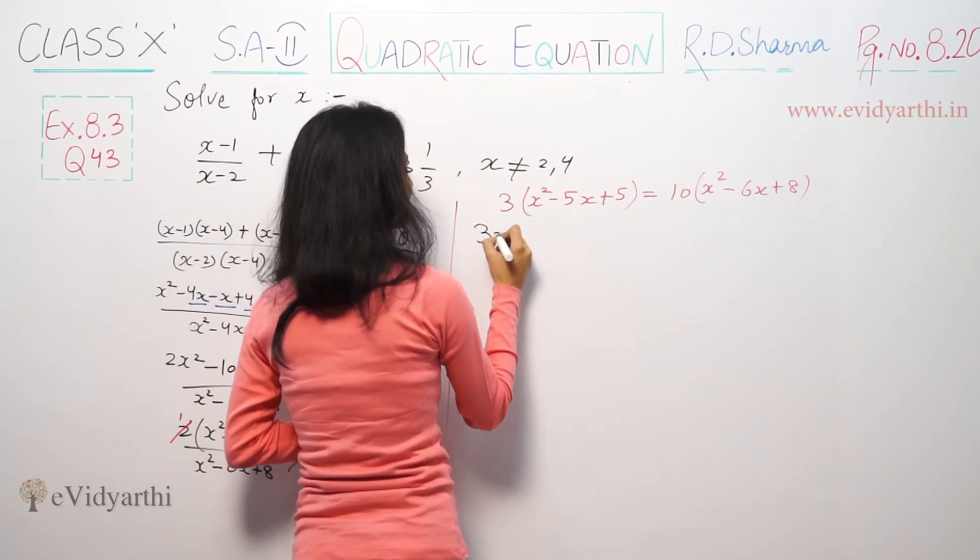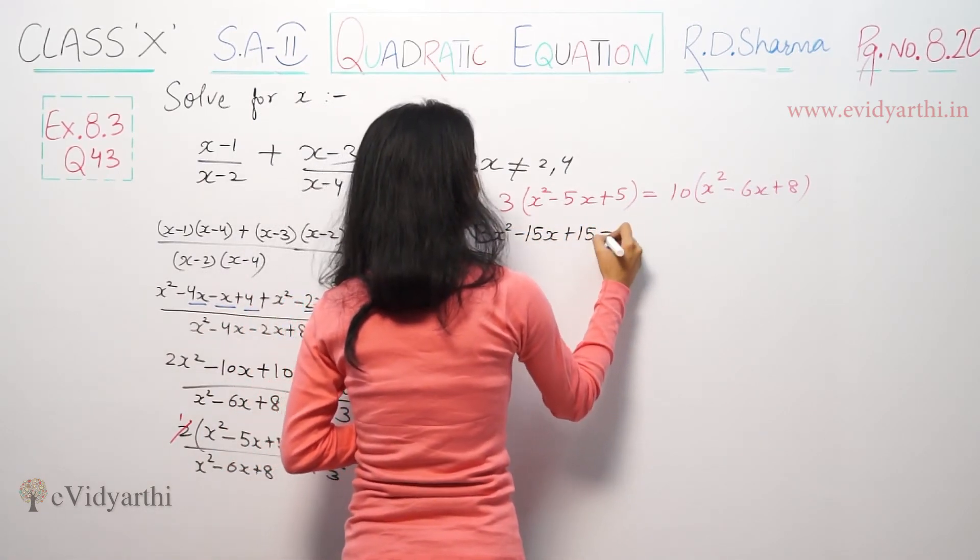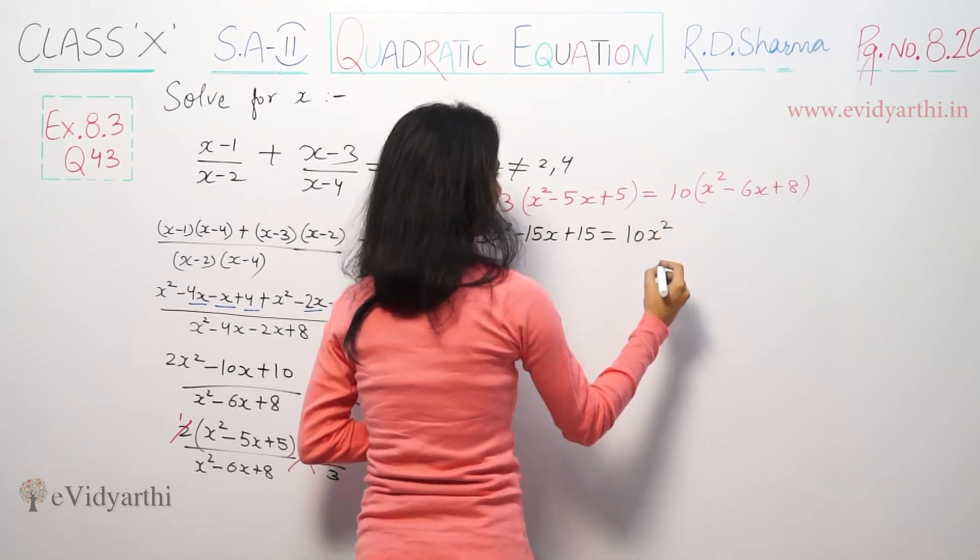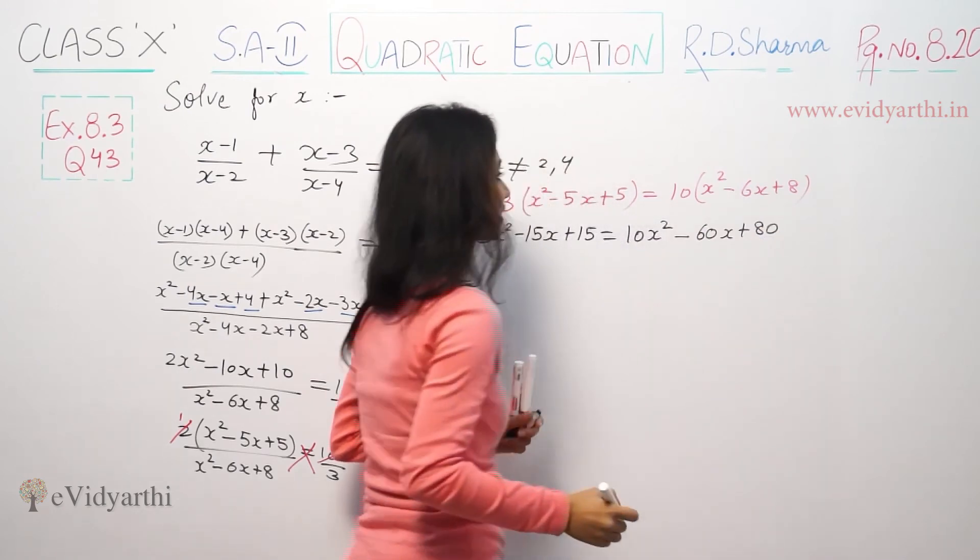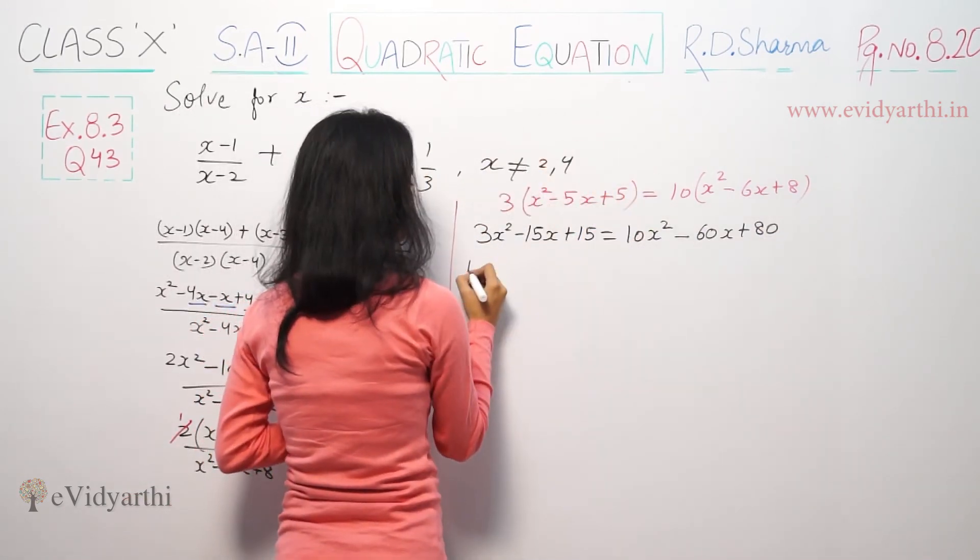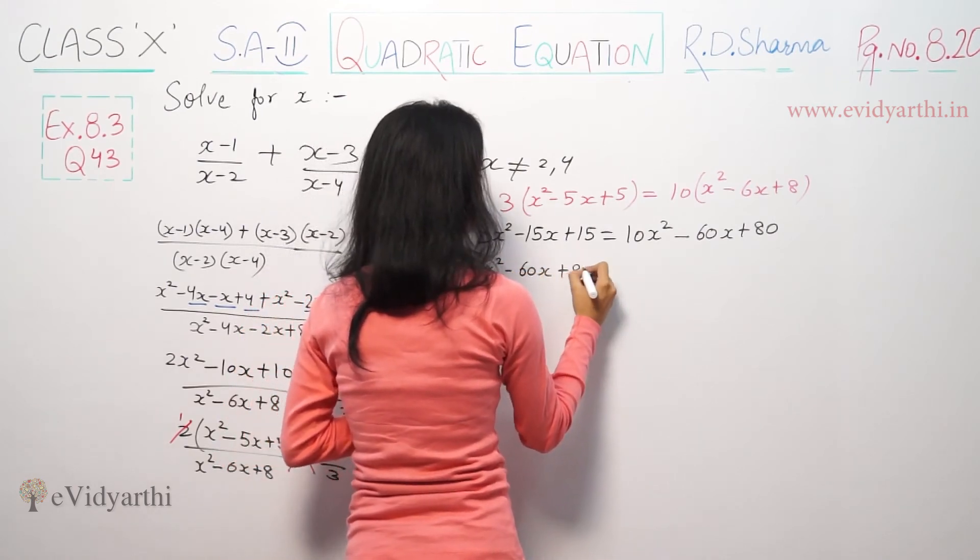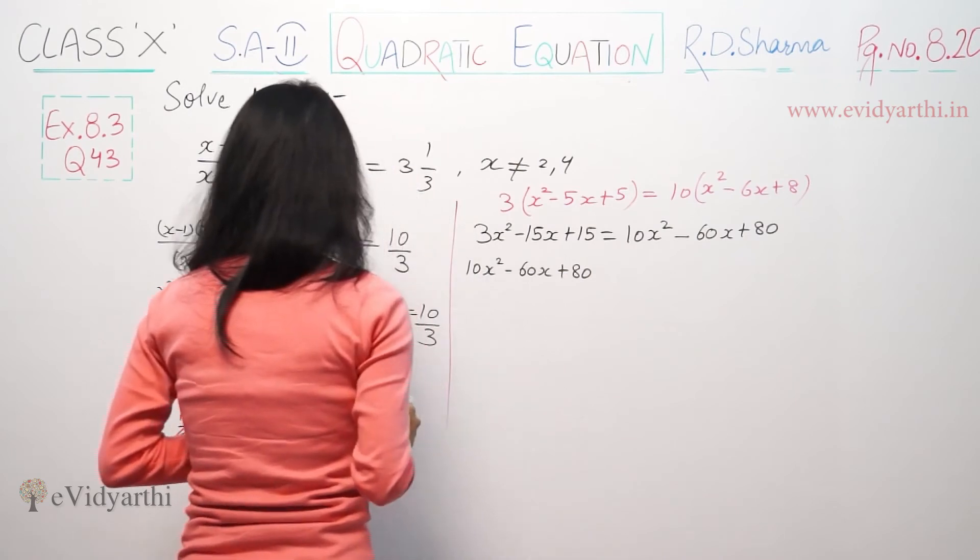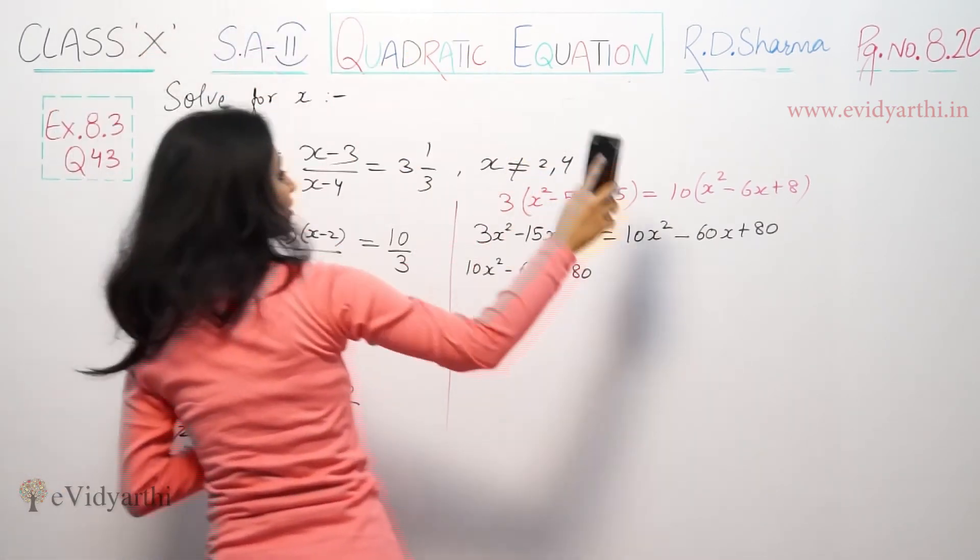We have (x² - 5x + 5)/(x² - 6x + 8) = 5/3. Now these two are here. So we cross multiply: 3(x² - 5x + 5) = 5(x² - 6x + 8). This gives 3x² - 15x + 15 = 5x² - 30x + 40.